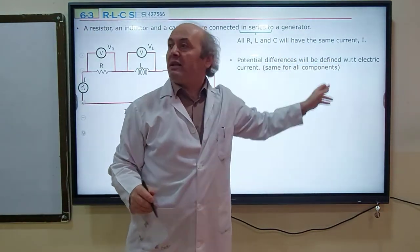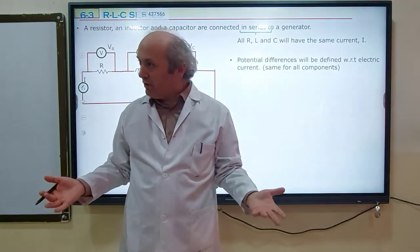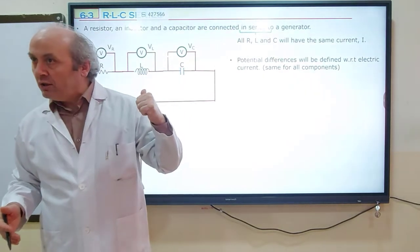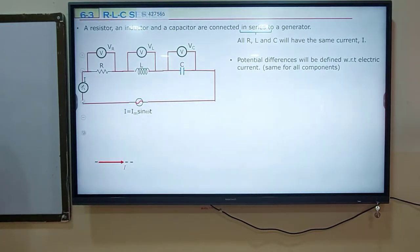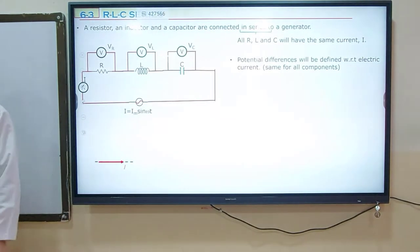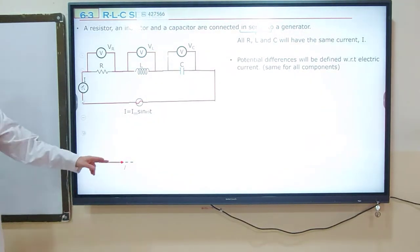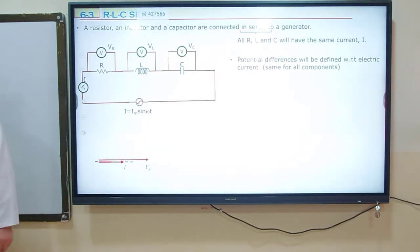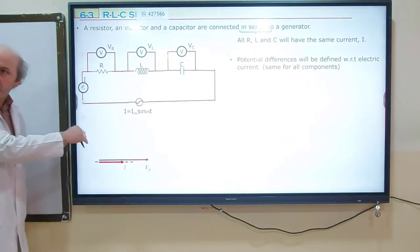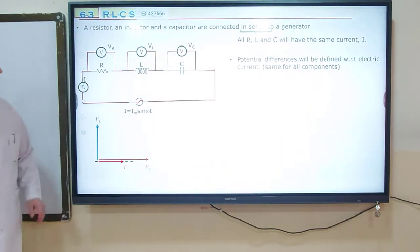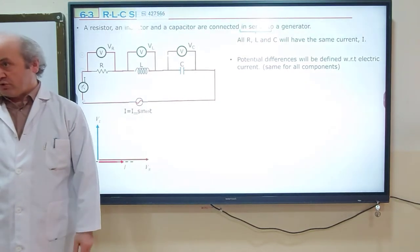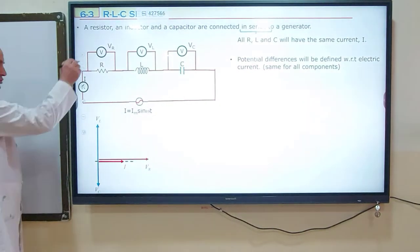The electric current is drawn horizontally as Im sin(ωt). For a pure resistor, potential difference is in phase with the electric current, so VR is horizontal in the same direction. For a pure coil, potential difference leads the electric current by π/2, so VL is rotated 90° — this is VL. But for a capacitor, the potential difference lags, rotated in the clockwise direction — this is VC.